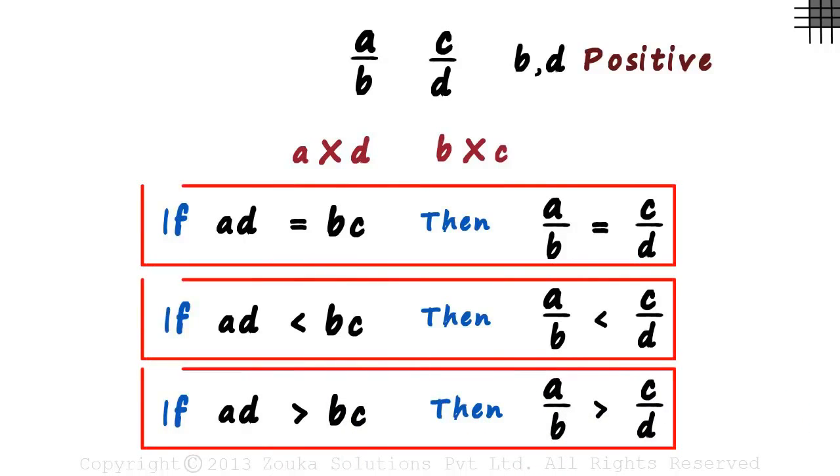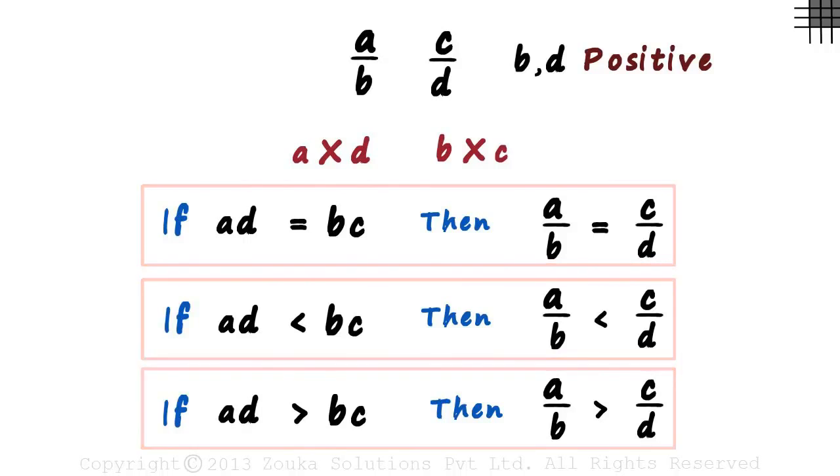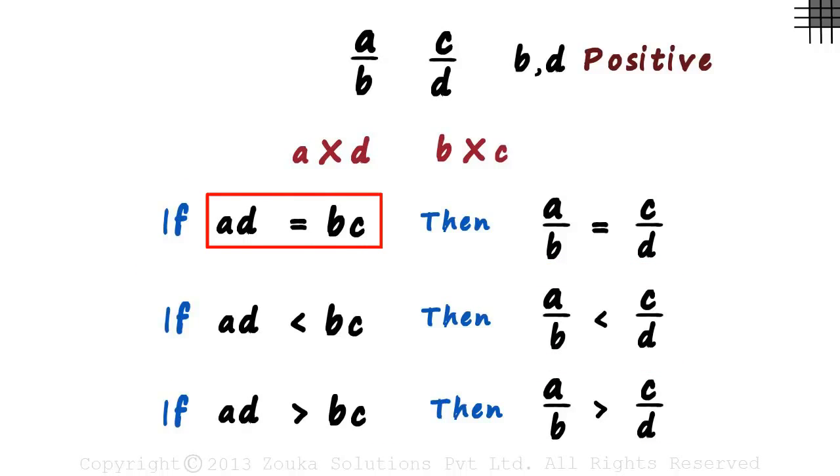That's how simple comparison of rational numbers is. If the products are equal, the rational numbers are equal. If this product is lesser than this one, then the first rational number is smaller. And if this product is greater than this one, then the first rational number is larger.